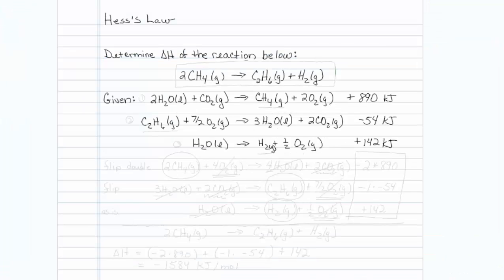This is how to use Hess's law to determine delta H of an unknown reaction. Our unknown reaction is given right here, and we don't know the delta H for that reaction. But we're given delta H's for three reactions right here.